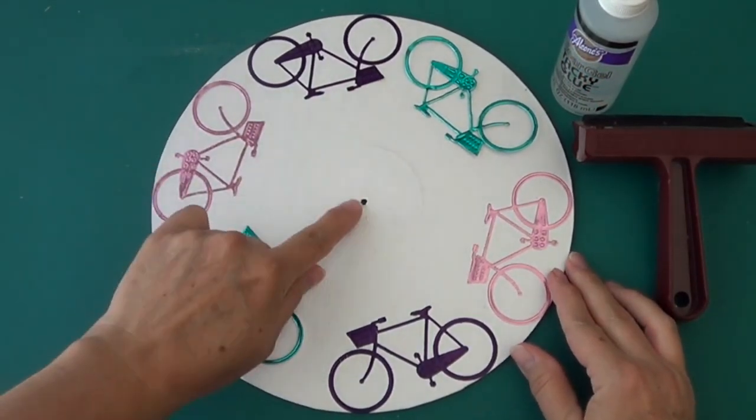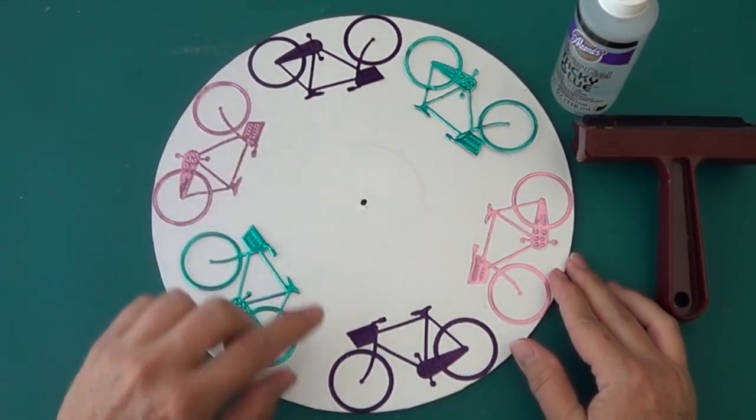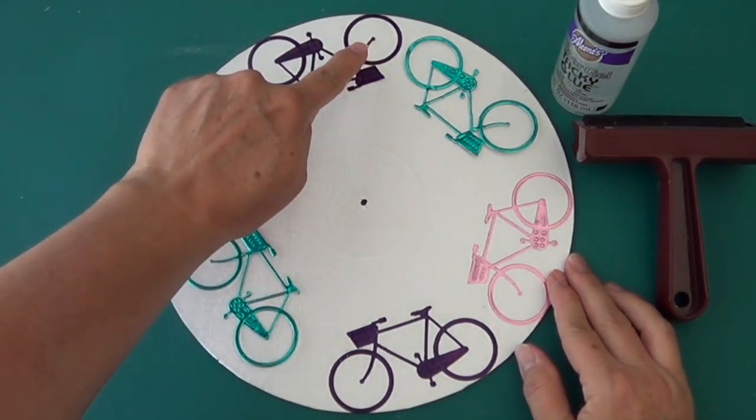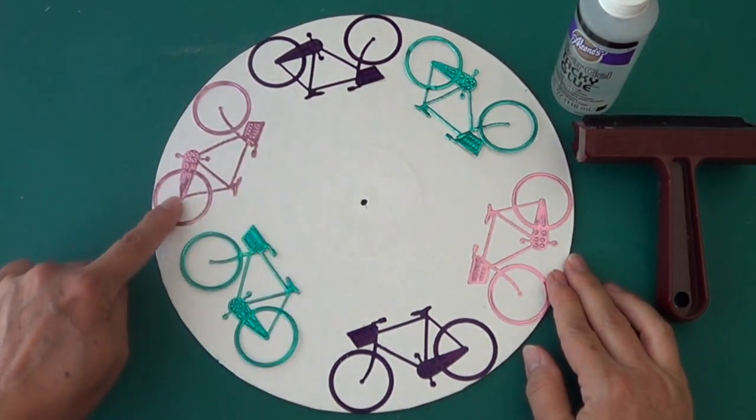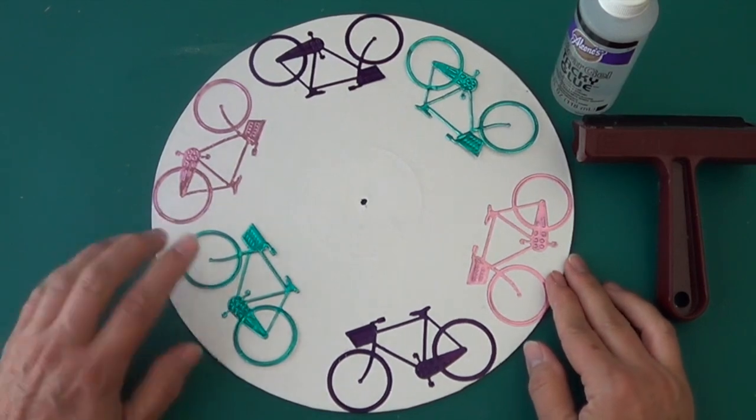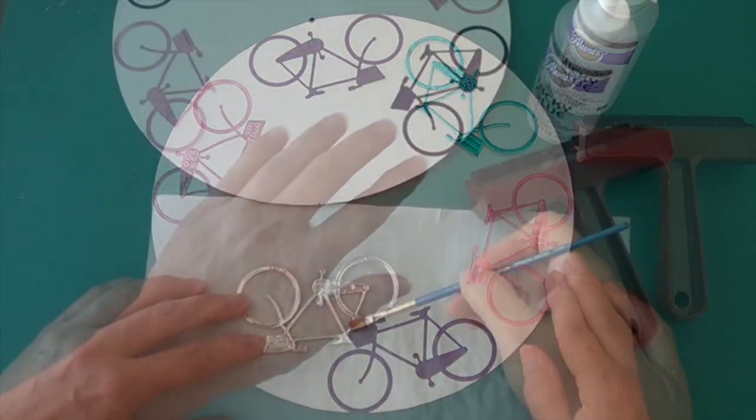After that's dry, punch a little hole in the center of the record and then position those bicycles evenly all around the perimeter. You want to make sure you have a wheel properly placed at twelve, three, six, and nine o'clock first.